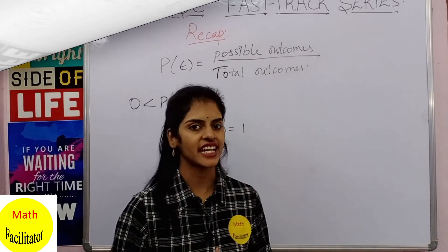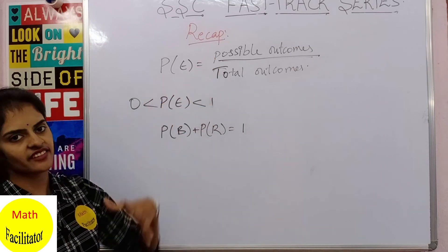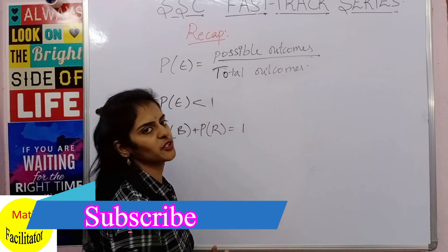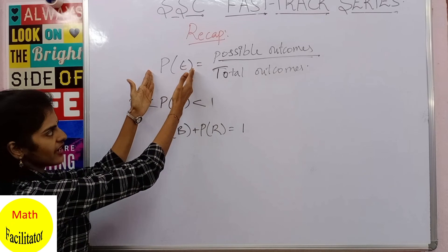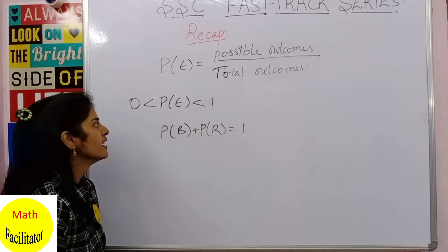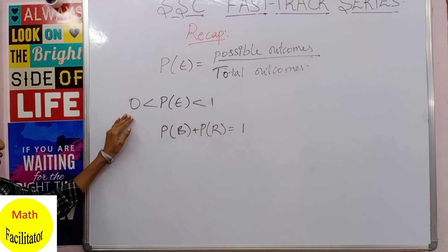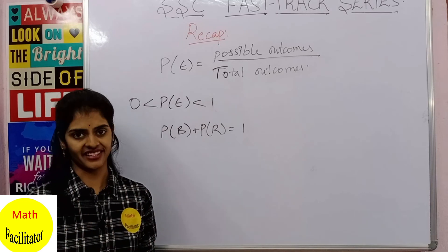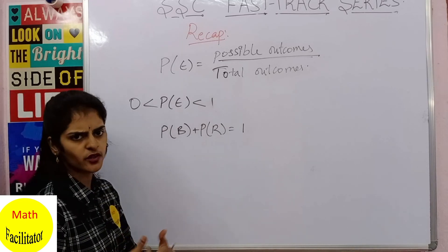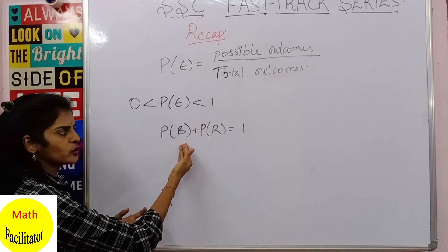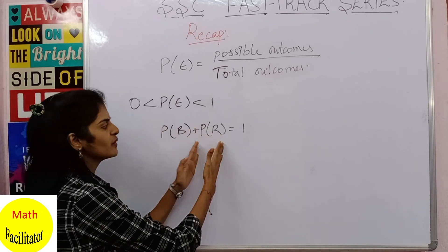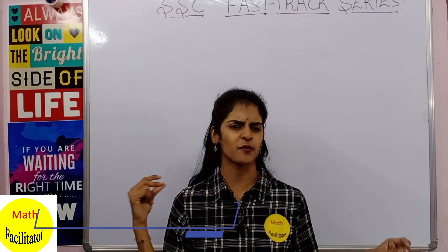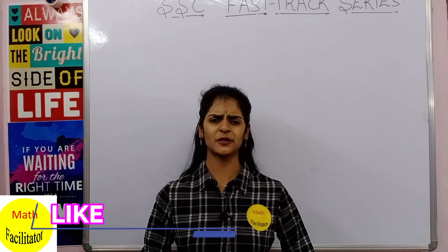Recapping: the probability of an event is the number of possible outcomes divided by the total number of outcomes. The value of probability is always between 0 and 1. If the probability is 0, it is an impossible event; if it is 1, it is a sure event. Also note that the sum of probabilities of all individual events always equals 1 — that's the magic of probability!